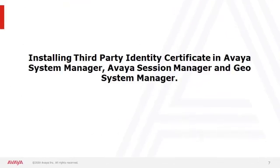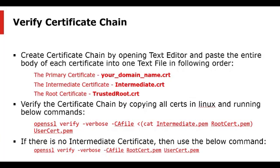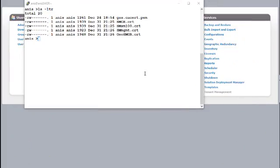Next we will see how to install the Third-Party Identity Certificate in Avaya System Manager, Session Manager, and GeoSystem Manager. Once we receive the identity certificate from the third party, we need to create a certificate chain. The certificate chain should be in order: first the Identity Certificate, then the Intermediate Certificate, then the Root Certificate. We can run the OpenSSL verify commands to check if the chain certificate is valid. I have copied all the certificates received from the third party into the System Manager command line and will create a chain certificate with the System Manager Identity Certificate and the Root Certificate.